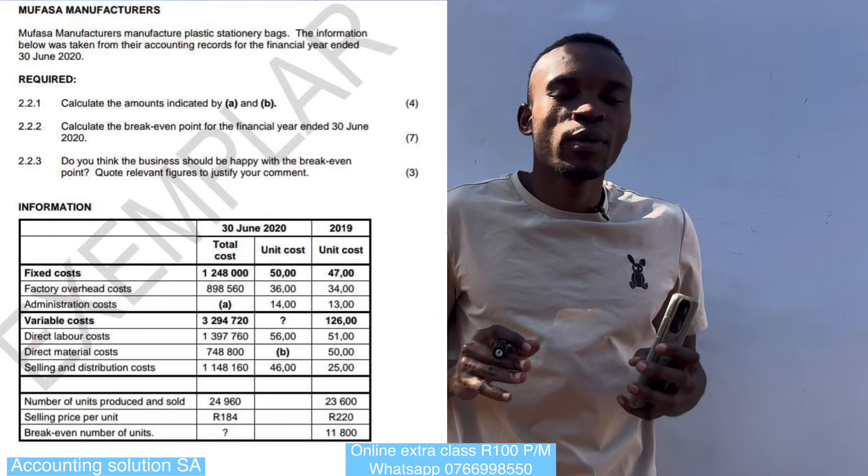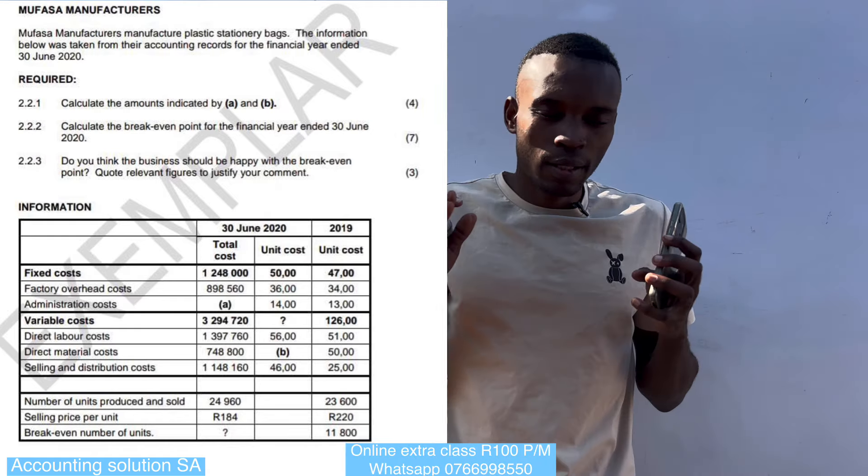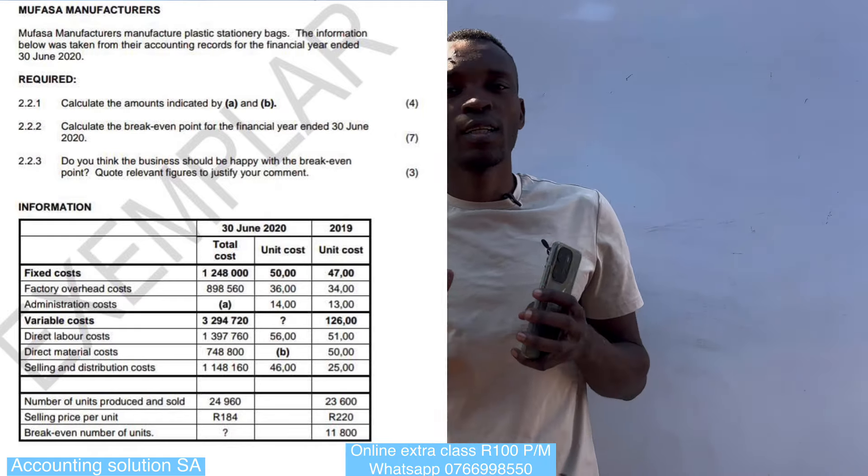Hi guys, in this video we are going to do a very simple and straightforward calculation with some commentary so that when you write your test or examination you will be able to answer this question and get full marks. This is a Paper 2 question because it's manufacturing — basically cost accounting. The question is about Mufasa, who manufactures plastic stationery bags, and the information below was taken from the accounting records for the financial year end 30 June 2020.